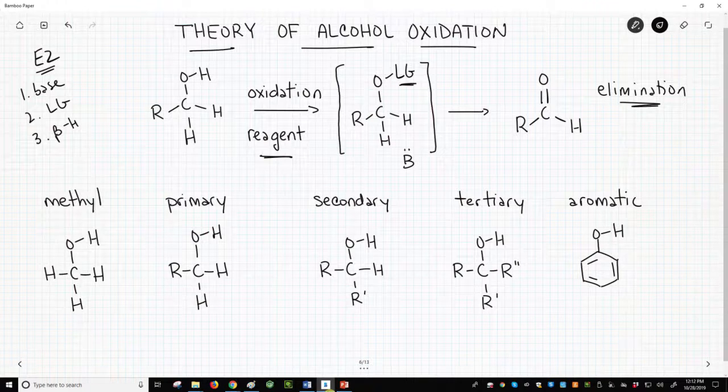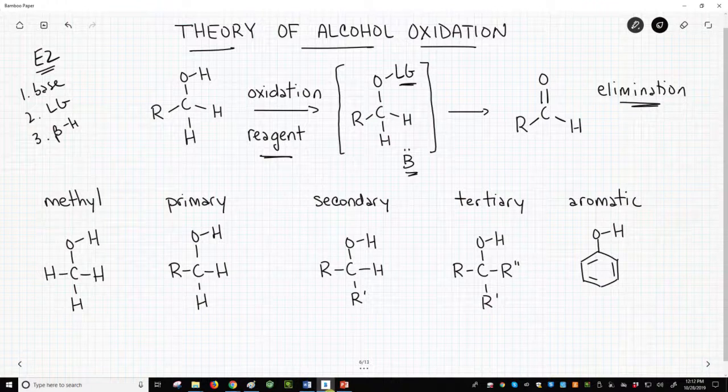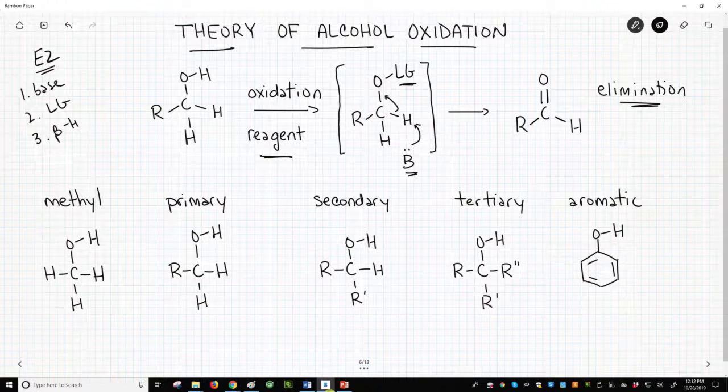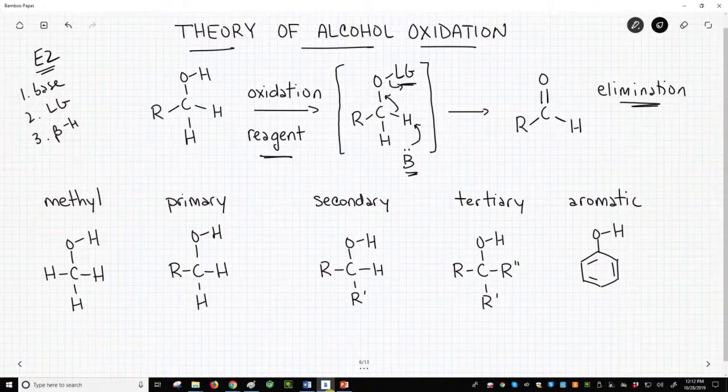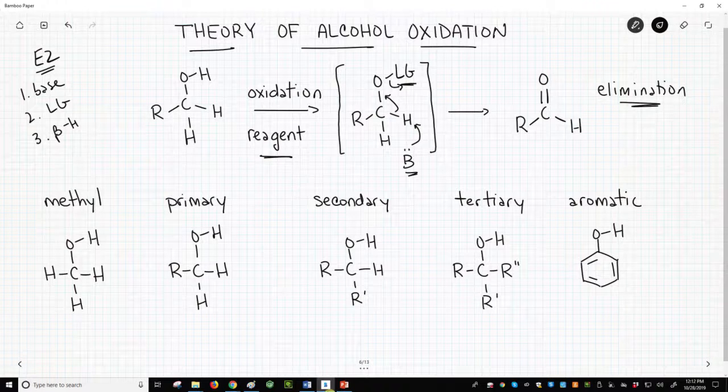The reagents also provide a base in some form, which removes a beta hydrogen relative to our leaving group, and this ultimately forms the new pi bond. We will leave the specific reagents for the next video, so let's focus on the beta hydrogen.